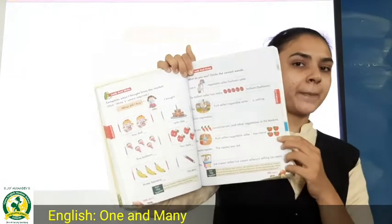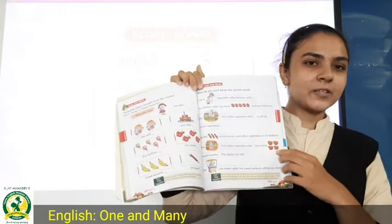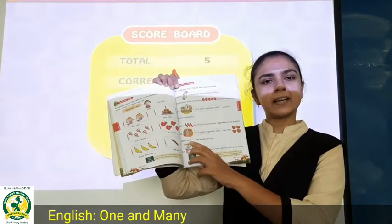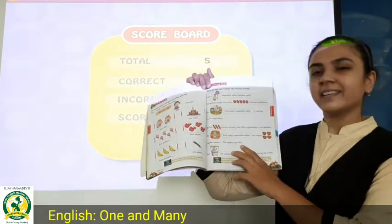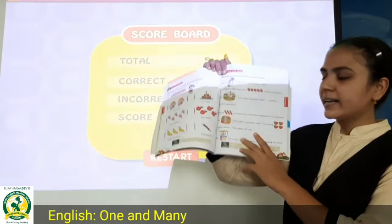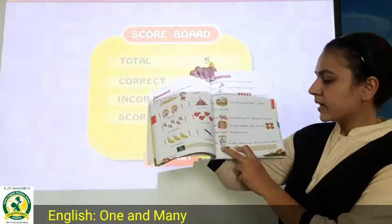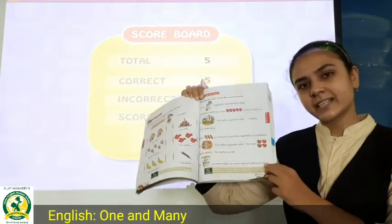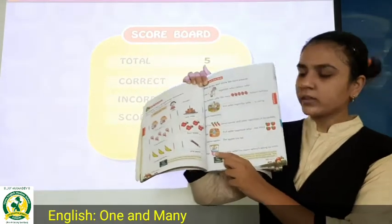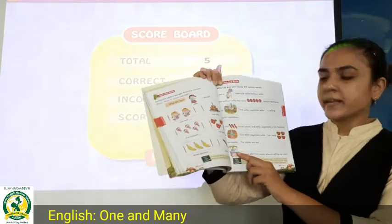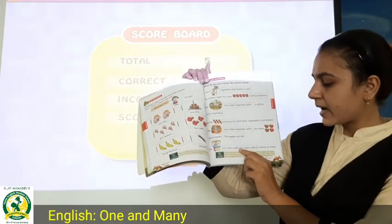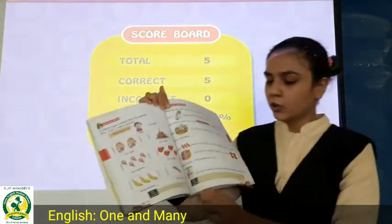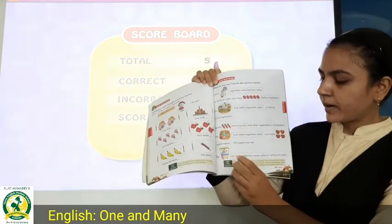This is an apple — it is apples. The apples are red. We will circle all. Now see the last one: the ice cream seller is selling ice cream. The options are ice cream seller and ice cream sellers. We will circle the correct one.